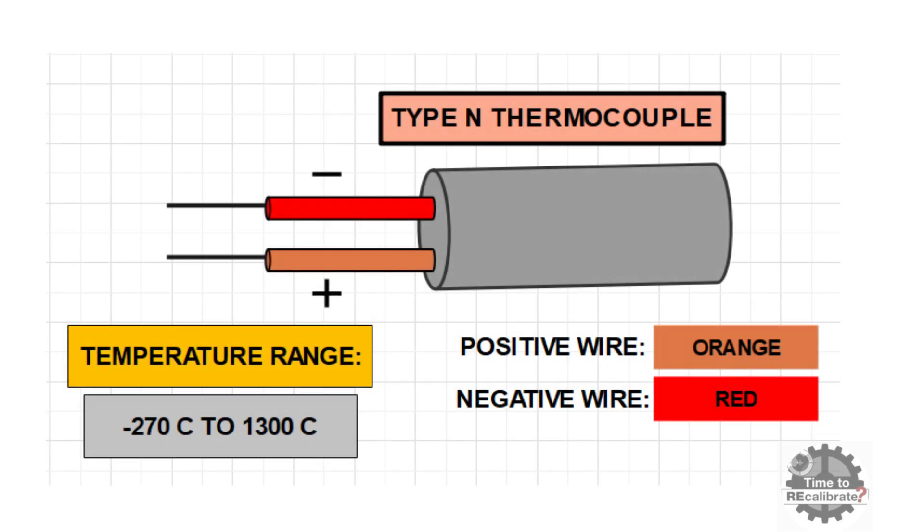As you can see, fourth type is N type thermocouple. N type thermocouple has one orange wire and one red wire. In this combination, orange wire is positive and red wire is negative. And N type thermocouple has temperature range of minus 270 Celsius to 1300 Celsius.